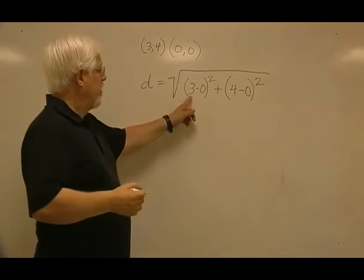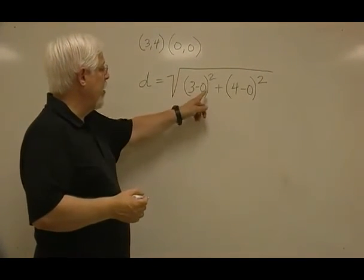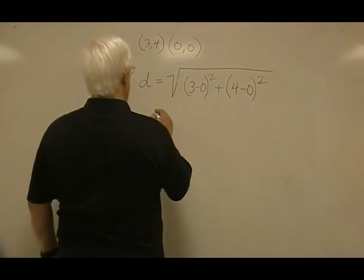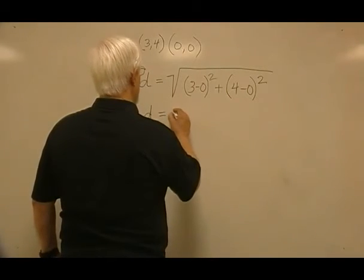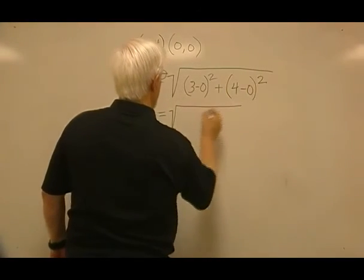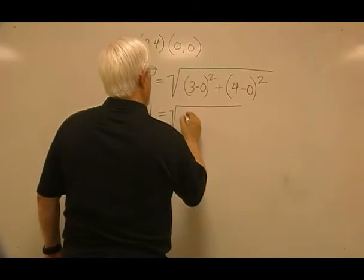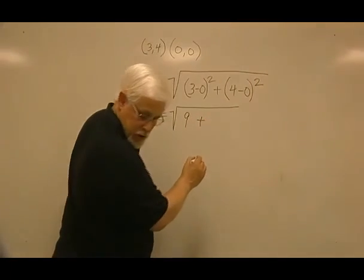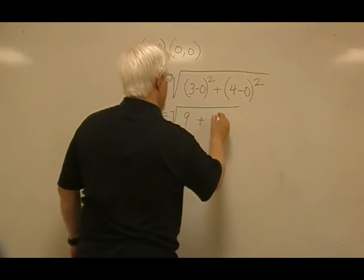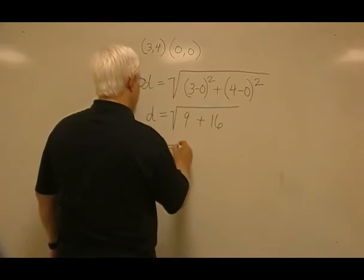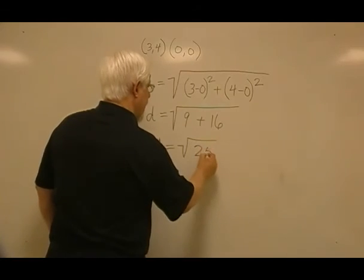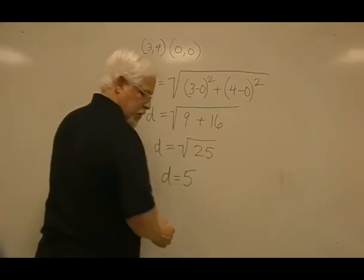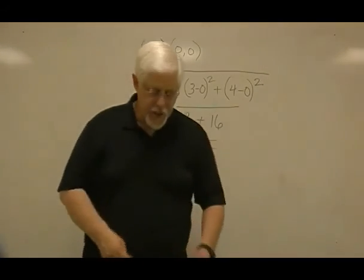And we get 3 minus 0 squared plus 4 minus 0 squared. Here, D equals square root 9 plus 16, D, therefore, equals square root of 25. And you should know the square root of 25 is 5. So the answer for number 8 is C, 5.